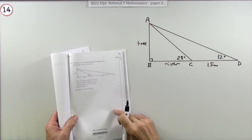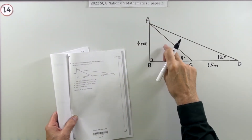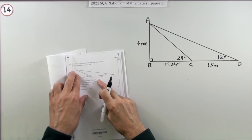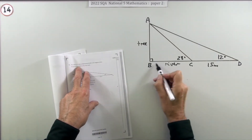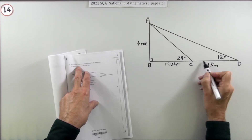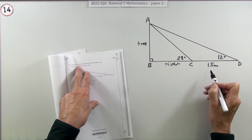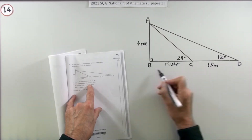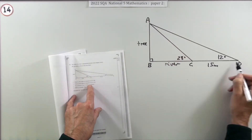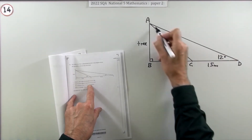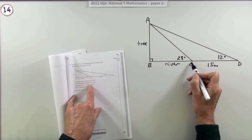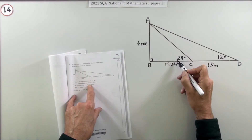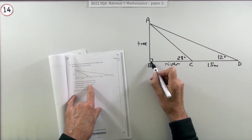Number 14 then — the last question, worth five marks. It's a scaling triangle problem involving sine rule and cosine rule. It's a practical situation: it's difficult to measure the width of a river directly, but you can measure things on land. Given that you measure the angle of elevation to a tree at 12 degrees, then move 15 metres to the river bank and measure the angle of elevation again — this time 28 degrees — that's sufficient information to work out the width of the river.